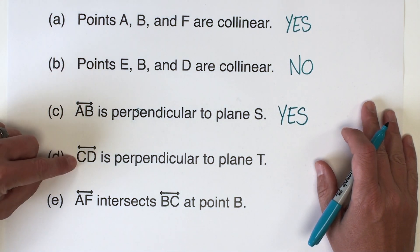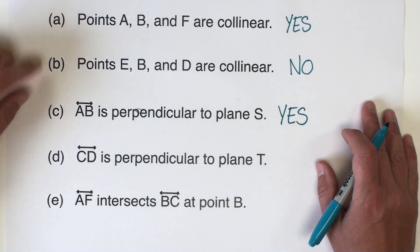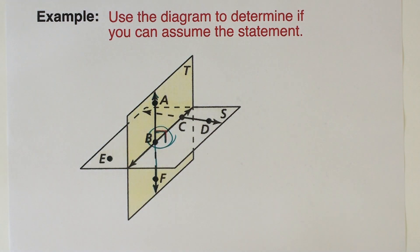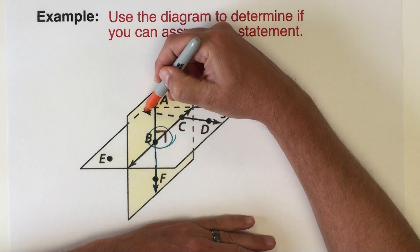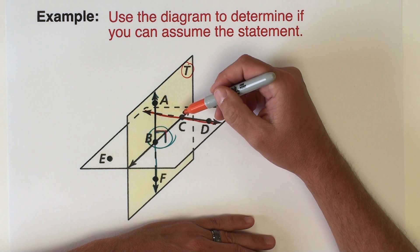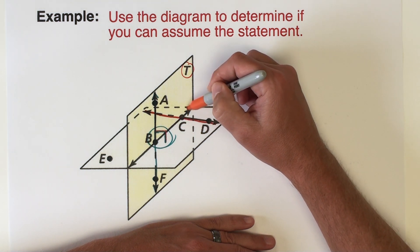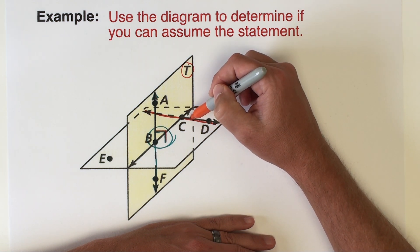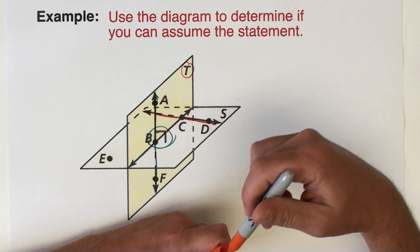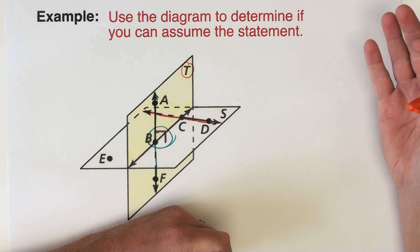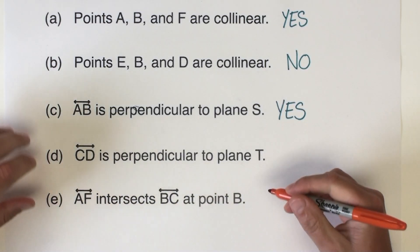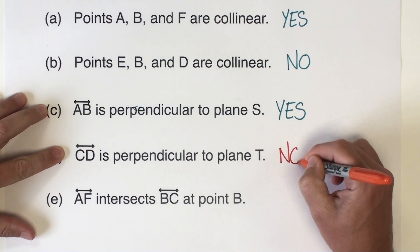The next statement says line CD is perpendicular to plane T. Line CD is this line here, and plane T is right here. Nowhere do I see any right-angle box connecting that line and that plane. Since I don't see that right-angle box, I cannot assume they are perpendicular — they might be, but without that visual clarification I cannot assume it. So line CD perpendicular to plane T gets a no.